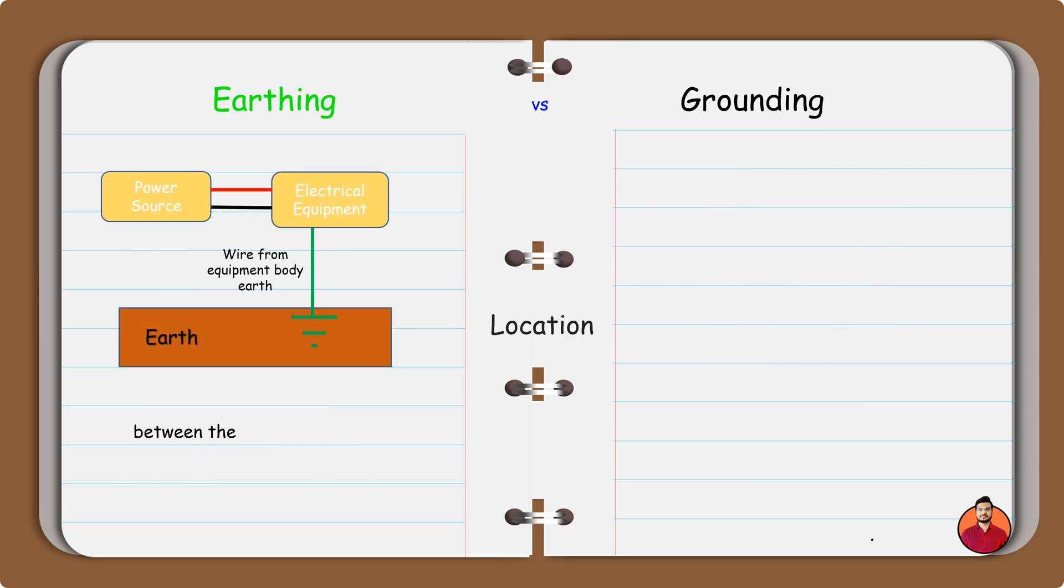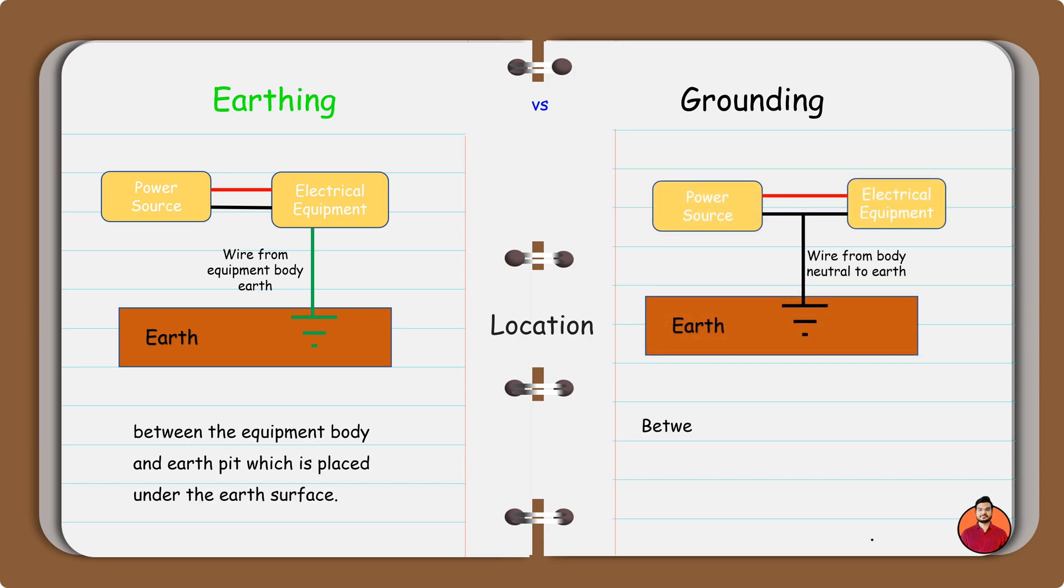Earthing is connected between the equipment body and earth pit, which is placed under the earth surface. Grounding is connected between the neutral of the equipment and ground.